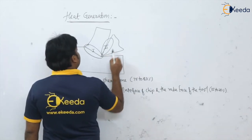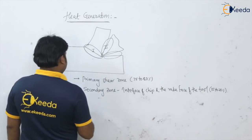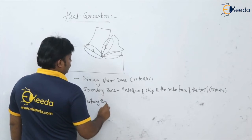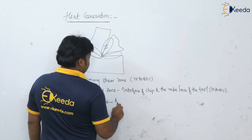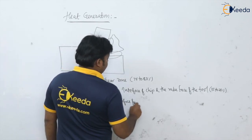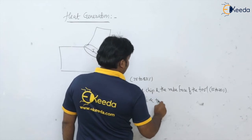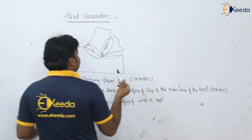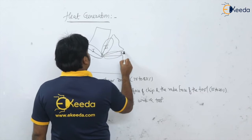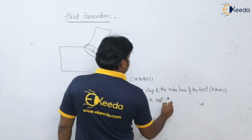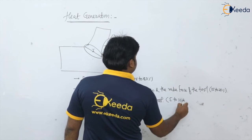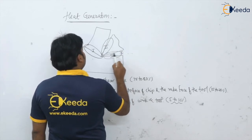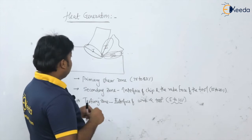The third zone is the tertiary zone, which is at the interface of the workpiece and the tool. In this zone, a very small amount of heat energy is generated — up to 5 to 10 percent of the total heat is generated or dissipated in this tertiary zone.